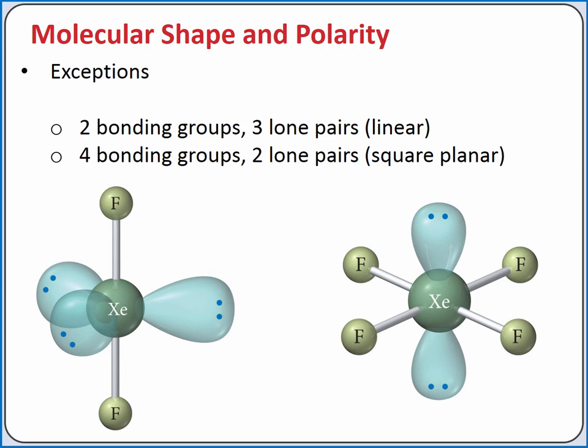The same is true if we have four bonding groups and two lone pairs, which is square planar molecular geometry. The four identical polar bonds cancel each other out, and the two lone pairs cancel each other out separately, so that the square planar molecular geometry is nonpolar.